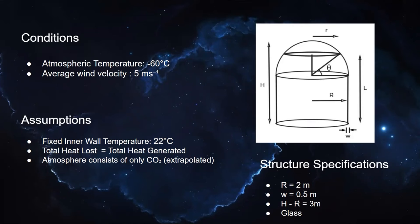The assumptions we took were, we fixed the inner wall temperature to be 22 degree celsius, which is ideal to sustain human life. Another important assumption was, the total heat lost from the structure was equal to the total heat generated by the source inside, which made the net heat change of the structure to be zero.